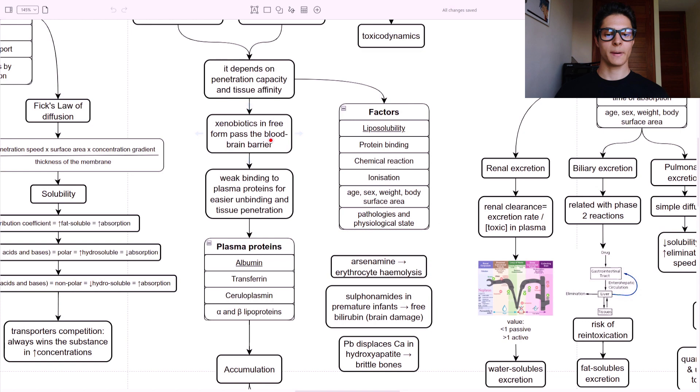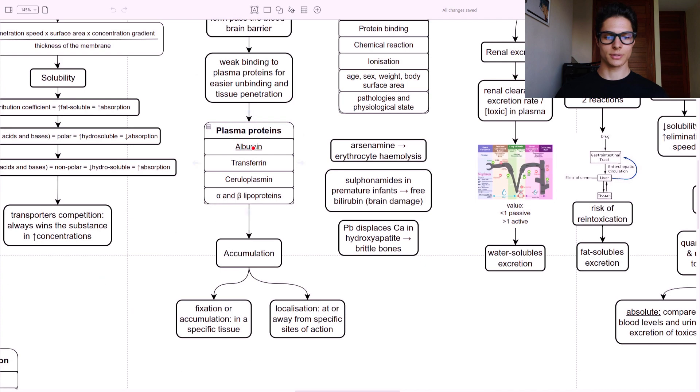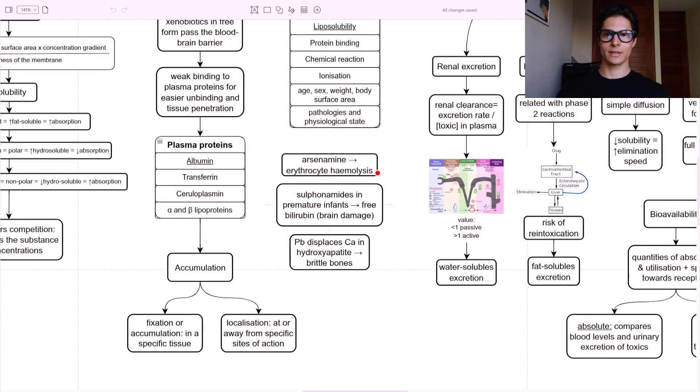Xenobiotics in free form pass the blood-brain barrier - very important, in the free form. There is a weak binding to the plasma proteins for easier unbinding and tissue penetration. So they are transported through the blood using these proteins and there is a weak binding to those so it is easier to unbind and be in the free form to actually pass the blood-brain barrier. And these are the plasma proteins we are going to use - albumin for sure, transferrin, ceruloplasmin, and also the alpha and beta lipoproteins. Accumulation - how it can happen? By fixation or accumulation in a specific tissue or based on the localization at or away from a specific site of action. And these are some ways of distribution.